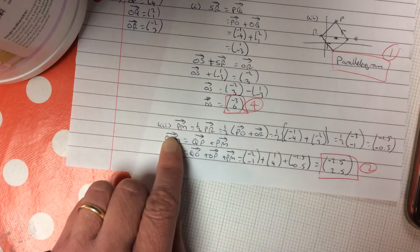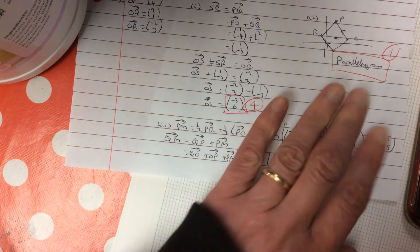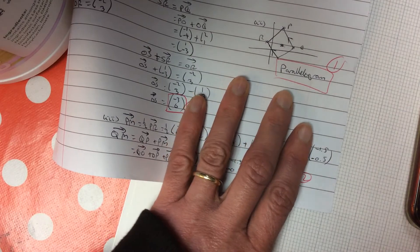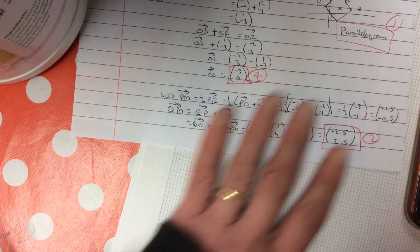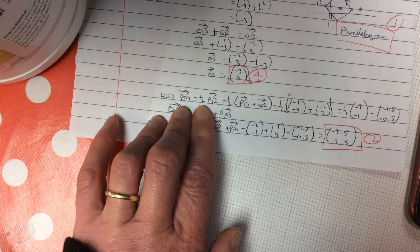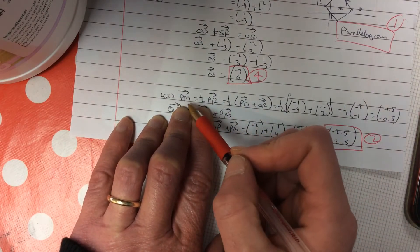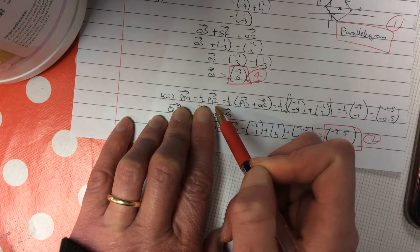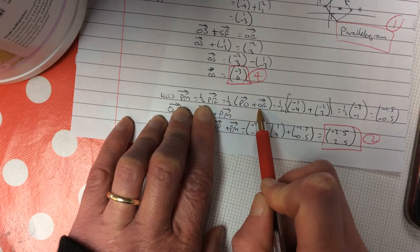And then part two, what shape? It's a parallelogram. You sort of draw that out there. It helps you see it. M is the midpoint of PR. So, PM is half of PR, because it's the midpoint. PR, you can work out.